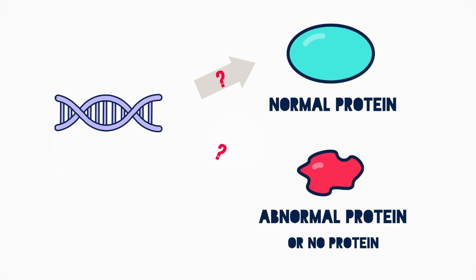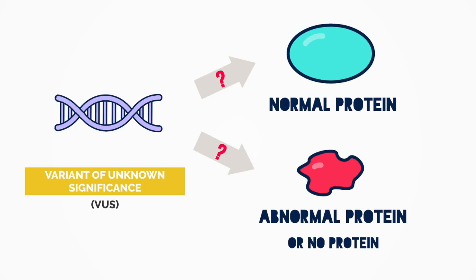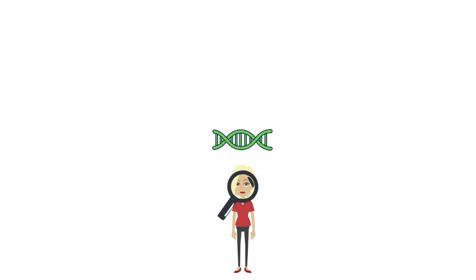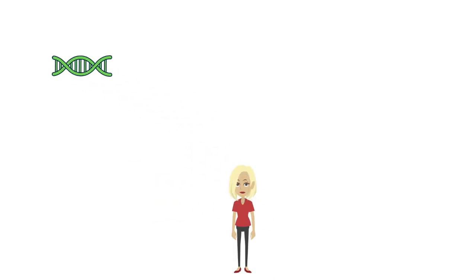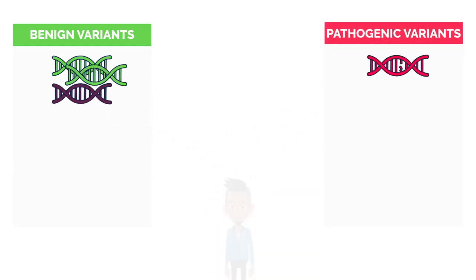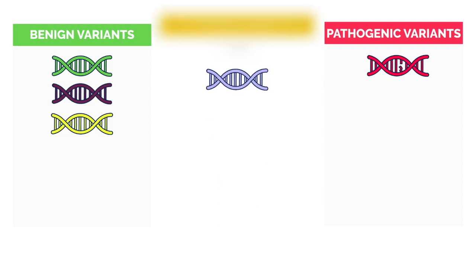Many times we'll see a new version of a gene and we don't actually know what it does. We call this a variant of unknown or uncertain significance, or VUS. As we test more people, we learn more and more about the significance of these different versions of the same gene.